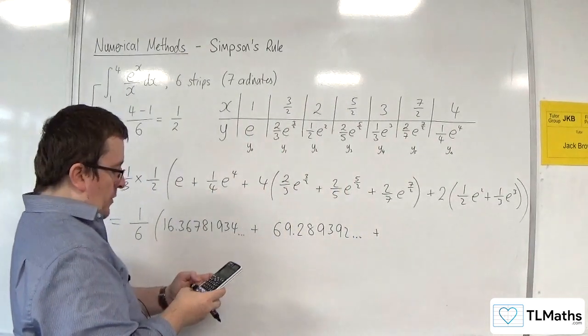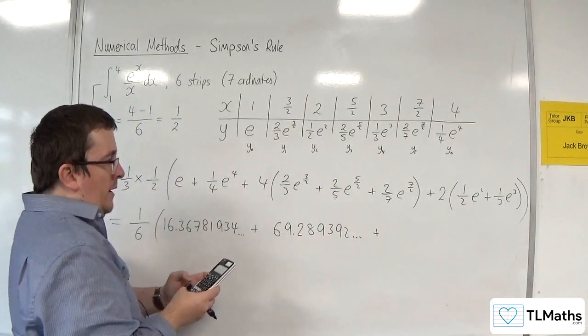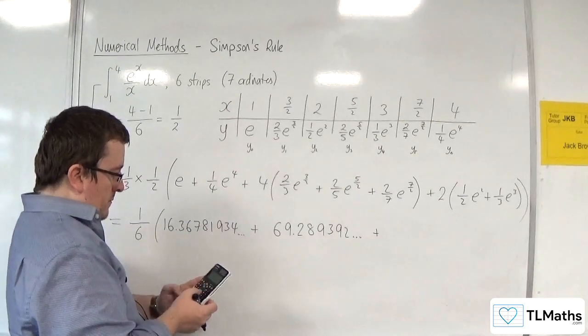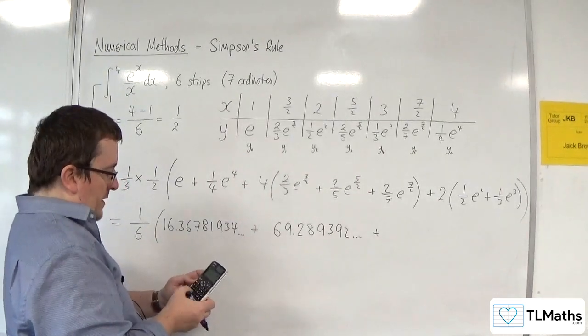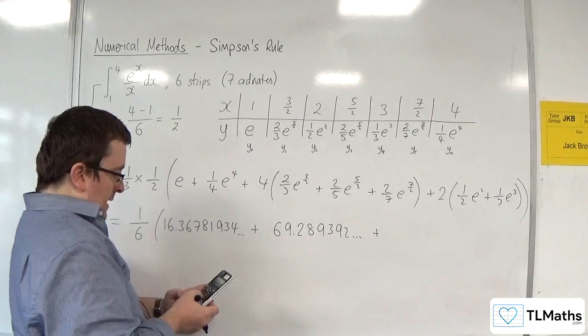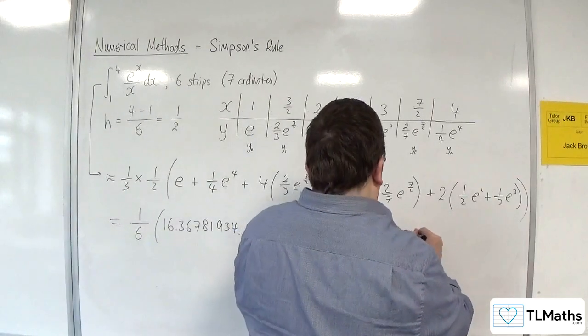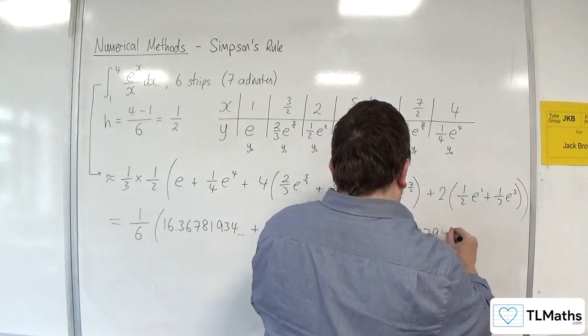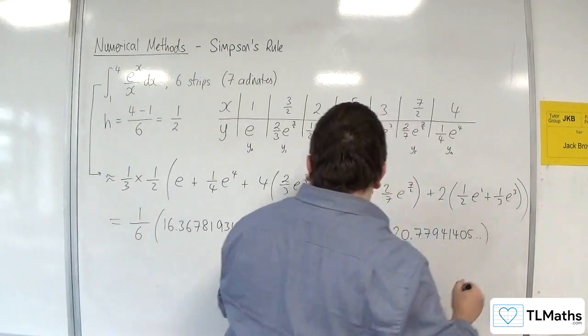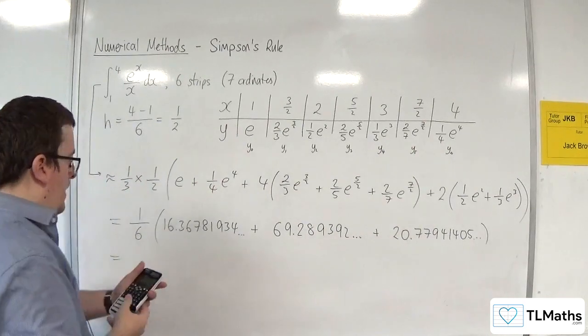And then we've got this bit. So 2 lots of 1 half e squared plus 1 third e cubed. And this is 20.77941405.